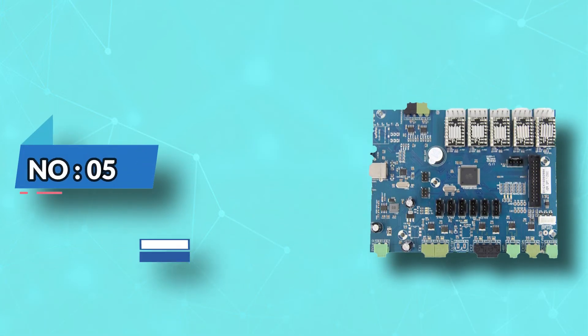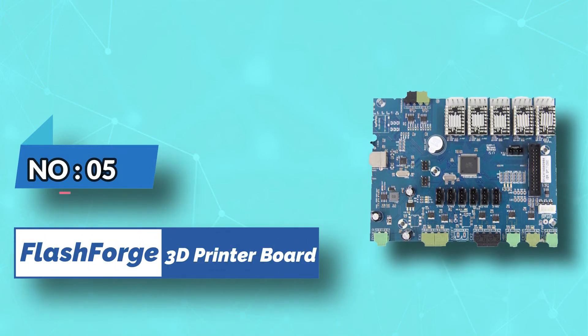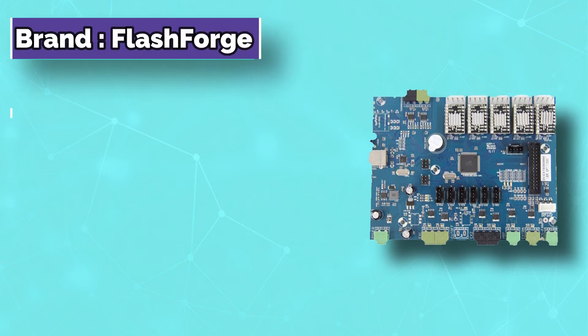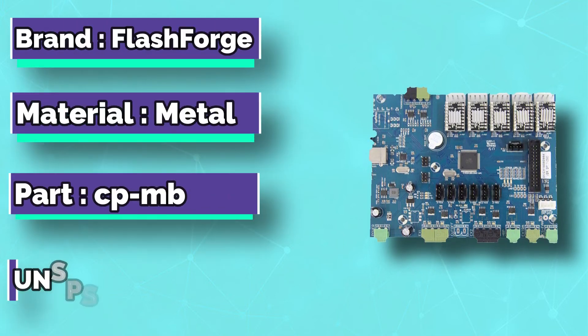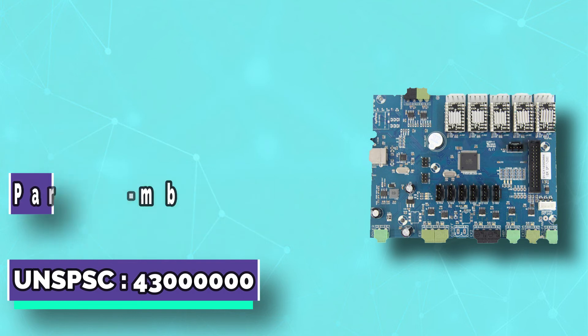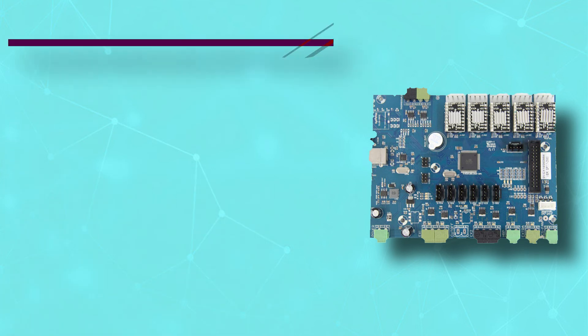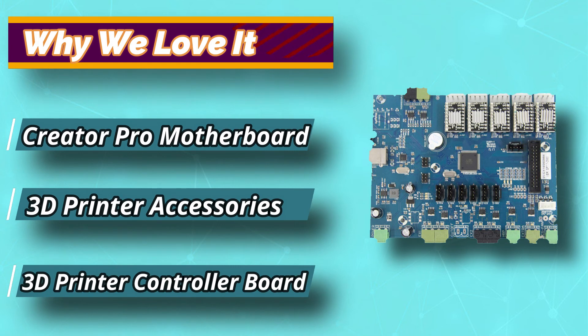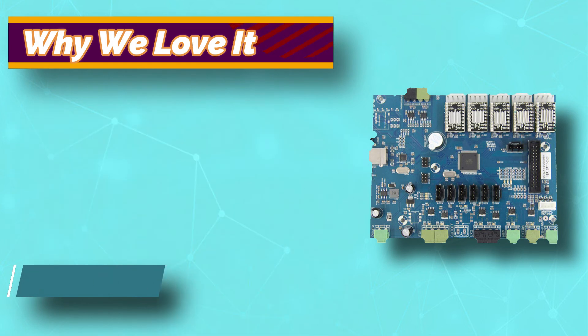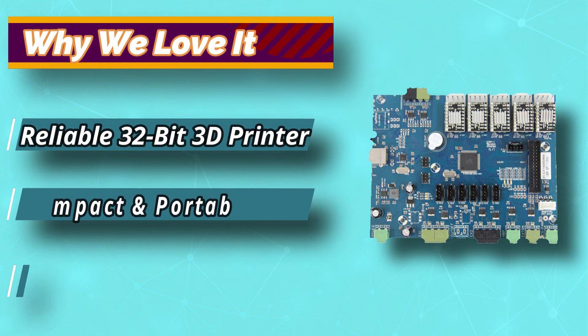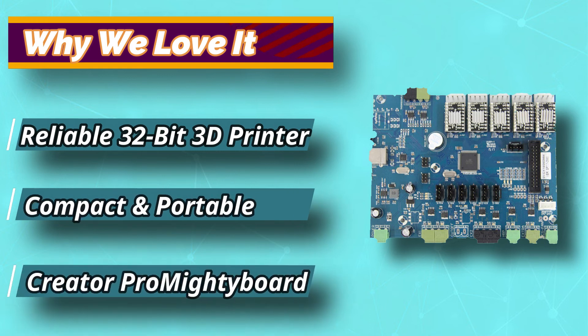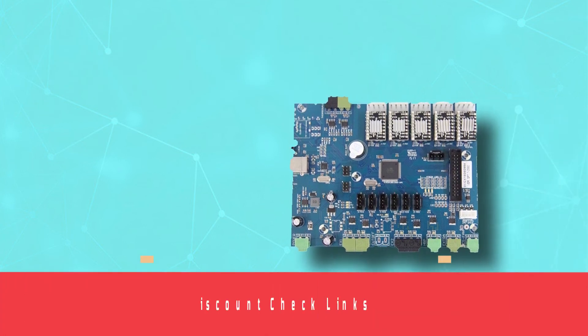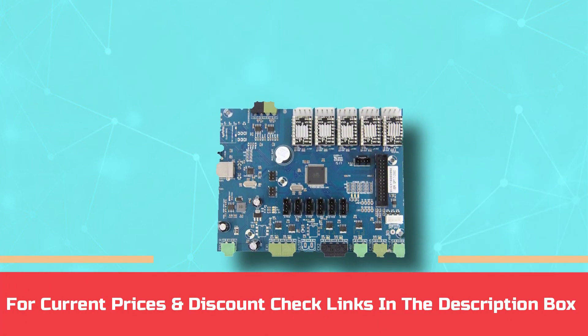Number 5: FlashForge 3D Printer Board. If you are looking for a reliable 32-bit 3D printer controller, the answer might be lying in the FlashForge Creator Pro MightyBoard. This controller comes with 12 volts and 24 volts power input options. Having been made of metal, you are guaranteed to enjoy using it for a long time. For current prices and discounts, check links in the description box.